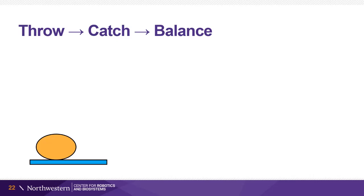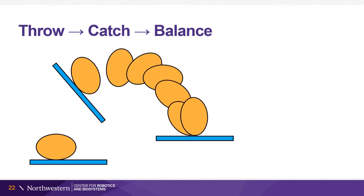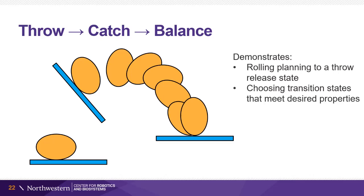We now present a hybrid motion plan where the object is thrown, caught, and then balanced. This demonstrates rolling planning to a throw release state, choosing transition states that meet desired properties, and controlling the catch to account for error.